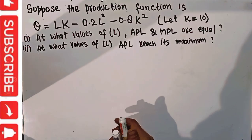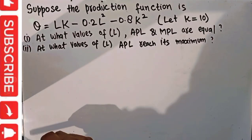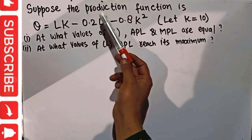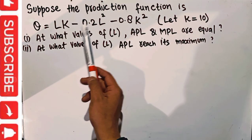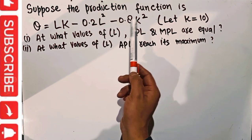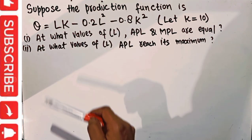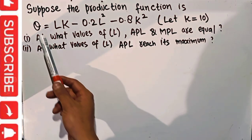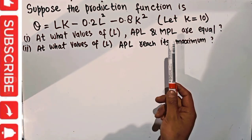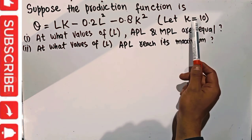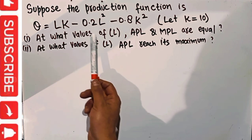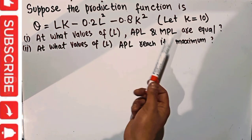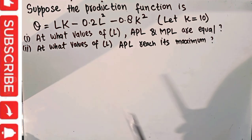Let us solve a question on average product of labor and marginal product of labor. Suppose the production function is given as Q = LK − 0.2L² − 0.8K², where L and K are the units of labor and capital, and Q denotes the total output. We are told that K is fixed at 10 units. We have to find out at what values of labor APL and MPL are equal, and at what values of L, APL reaches its maximum.